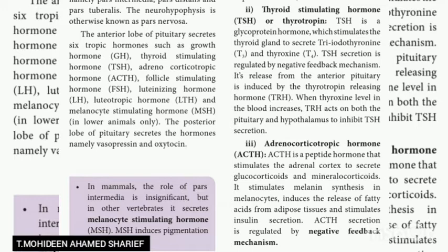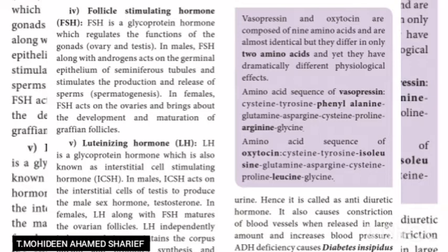In the picture you can see the thyroid stimulating hormones. These hormones come under the pituitary gland and hypophysis. The hypothalamus and pituitary glands are located in the brain, and they secrete many hormones such as thyrotrophin-releasing hormone, gonadotrophin-releasing hormone, corticotrophin-releasing hormone, growth hormone, prolactin, and luteinizing hormone.